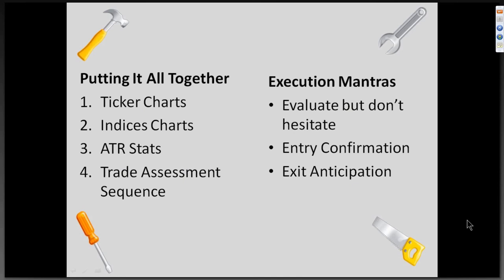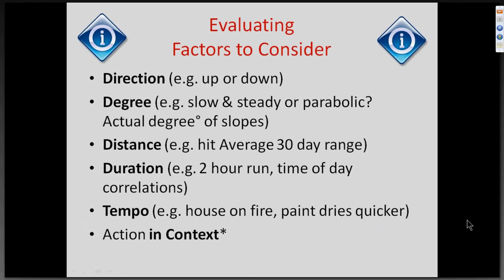Now I'm going to try to put this all together for you. I've got my charts for the ticker, I've got SPY, QQQ, and TNA monitoring those. I've got my range statistics up. I've got my trade assessment sequence. And I've got my mantras to keep me on track. I want to evaluate but not hesitate. I like to see confirmation on my entry and I like to use anticipation on my exits — I find if I wait for confirmation on my exits, I lose too much money. When I'm evaluating things, I always try to consider these factors: direction, degree, distance, duration, tempo, and place all of the action in some form of context.